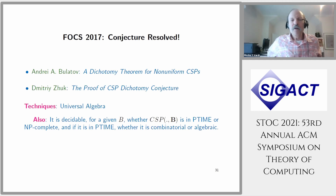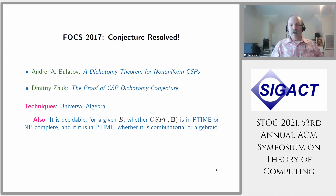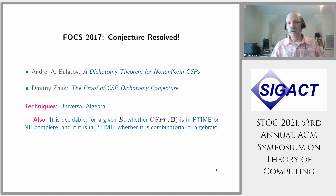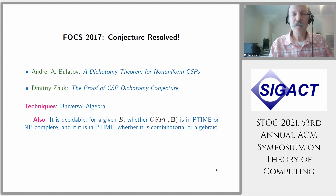This program lasted almost 25 years and was resolved in 2017 with two papers at FOCS: one by Andrei Bulatov and one by Dmitry Zhuk. Universal algebra was a popular topic in the Soviet Union and Russia, and using techniques from universal algebra they proved the dichotomy conjecture — it is now the dichotomy theorem. It is also an effective dichotomy: given a target B, it is decidable whether CSP(·, B) is in P or NP-complete, and if it is in P you can classify whether it is combinatorial or algebraic.